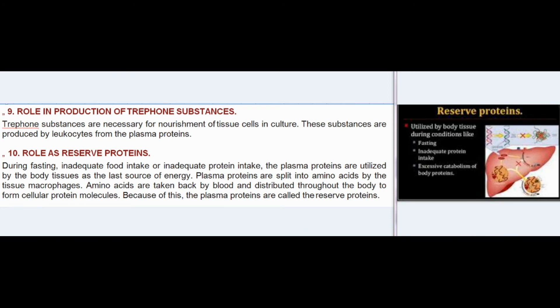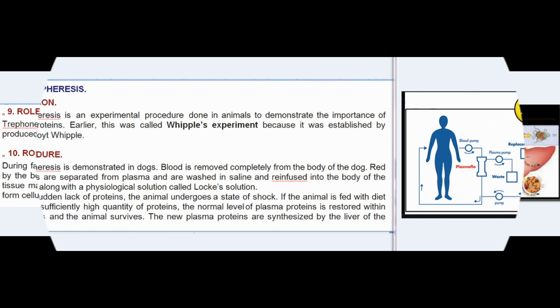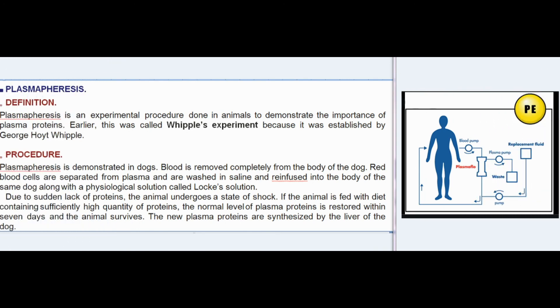(9) Role in production of trephone substances: Trephone substances are necessary for nourishment of tissue cells in culture; they are produced by leukocytes from plasma proteins. (10) Role as reserve proteins: During fasting or inadequate protein intake, plasma proteins are utilized by body tissues as a last source of energy. They are split into amino acids by tissue macrophages, distributed throughout the body, and therefore called reserve proteins.